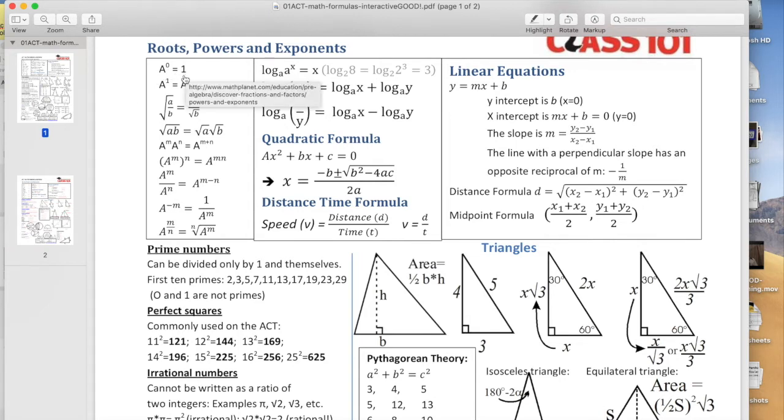Anything to the zero power is one. Anything to the first is itself. And if you take a square root of something, you can separate square roots. a to the m and a to the n, you add the exponents. And if you have powers of powers, you multiply the powers. If you divide, you subtract the exponents. Anything to the negative exponent means one over. I apologize it's bringing up the links and not showing the formula. And when you have a to the m over n, it's the nth root of a to the m. So that's a very common problem too that you'll see on the more advanced problems.